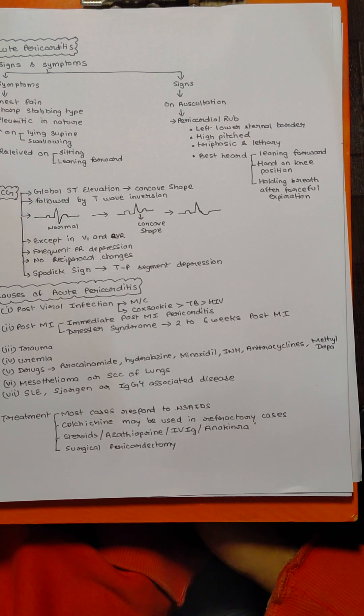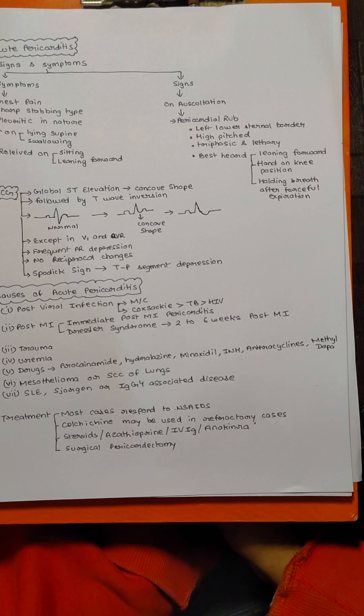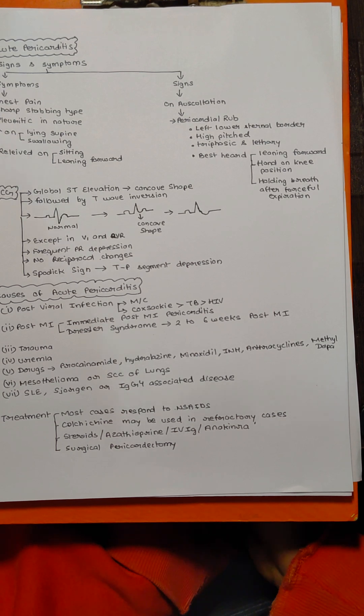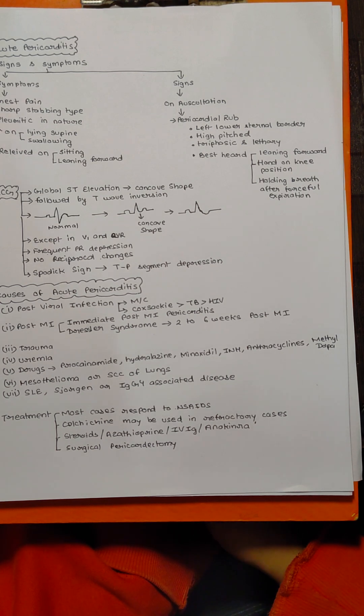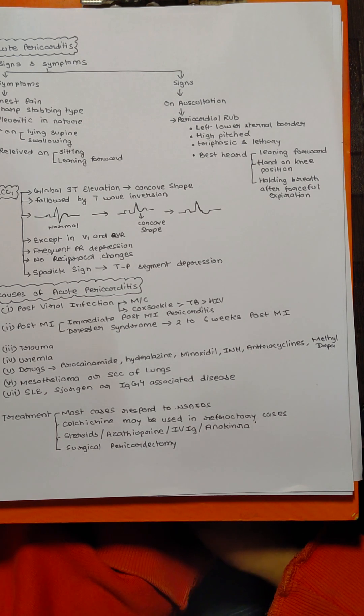Most cases respond to NSAIDs, but we must use colchicine if a patient is having refractory acute pericarditis attacks. Colchicine is something that you must have also heard when we were reading about gout.